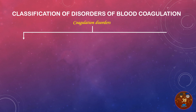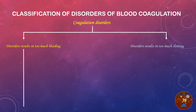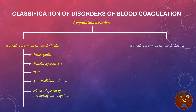Coagulation disorders can be classified into two types: disorders that result in too much bleeding, and disorders that result in too much clotting. Disorders resulting in too much bleeding include hemophilia, platelet dysfunction, DIC (disseminated intravascular coagulation), von Willebrand disease, maldevelopment of circulating anticoagulants, and vitamin K deficiency, which is considered the main factor.